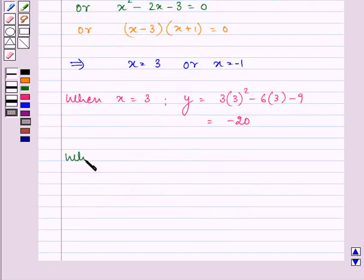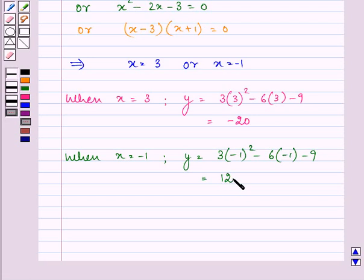And when x is equal to minus 1, then y is equal to 3 into minus 1 the whole square minus 6 into minus 1 minus 9 which is equal to 12.